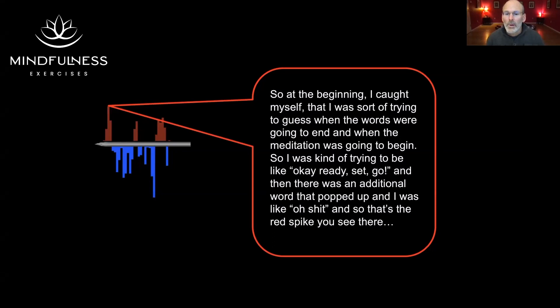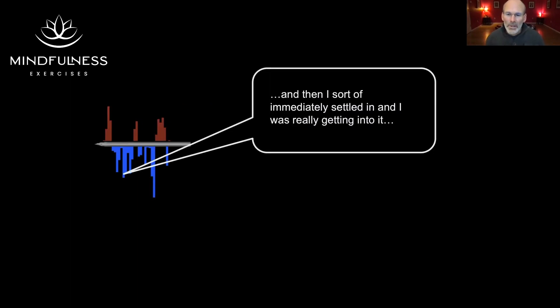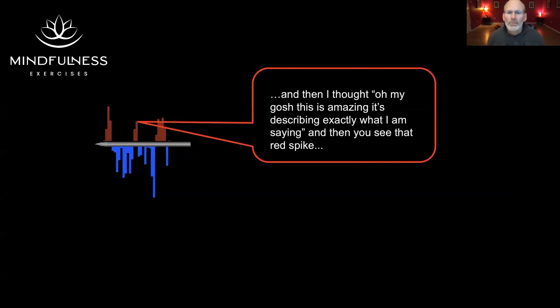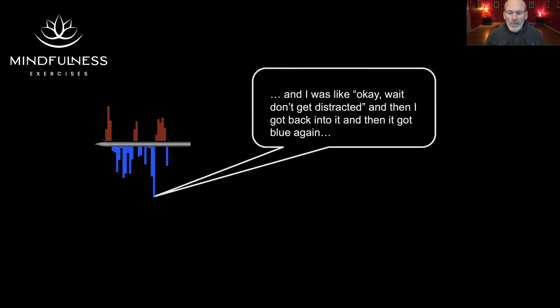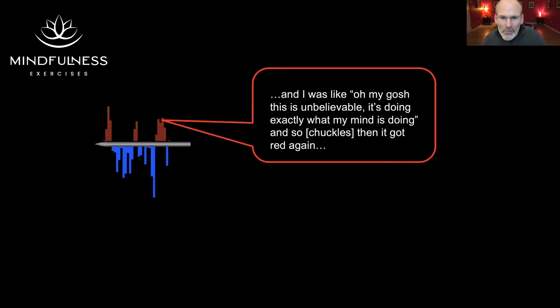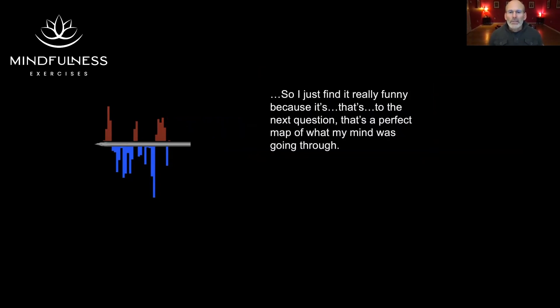He said he was kind of trying to be like, okay, ready, set, go. Then there was an additional word that popped up and he was like, shit — and there's that red spike you see there. Then he immediately settled in and was really getting into it, and he correlated this with the graph going down — posterior cingulate activity decreasing. He said, oh my gosh, this is amazing, it's describing exactly what I'm saying. Then there's that red spike — he thought, okay, don't get distracted — got back into it and went blue again. He said, this is unbelievable, it's doing exactly what my mind is doing. He was laughing, and said, I find it really funny — that's a perfect map of what my mind was going through.